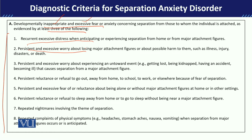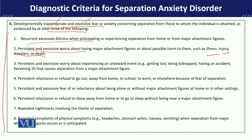Then there is persistent and excessive worry about losing major attachment figures — for example, fear that their parents might get an illness, injury, or die. There is also worry that something bad might happen to those they are attached to, such as getting lost, being kidnapped, or being in an accident — fear that those they are close to might face some problem.